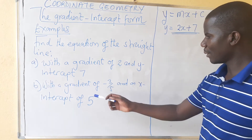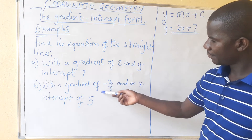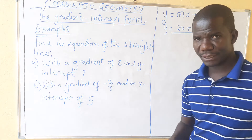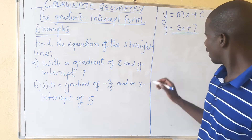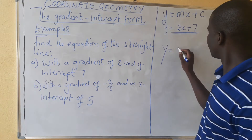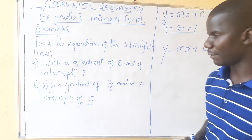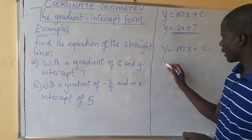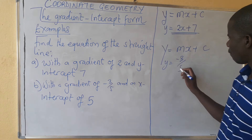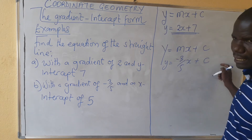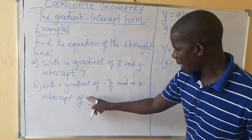Now let's look at the second example, where you are given the gradient and the x-intercept. In this case we use y = mx + c, but what we have been given is the x-intercept, not the y-intercept. Our gradient is minus 3 over 5, so we write: y = -3/5 x + c, where c is the y-intercept we need to find.